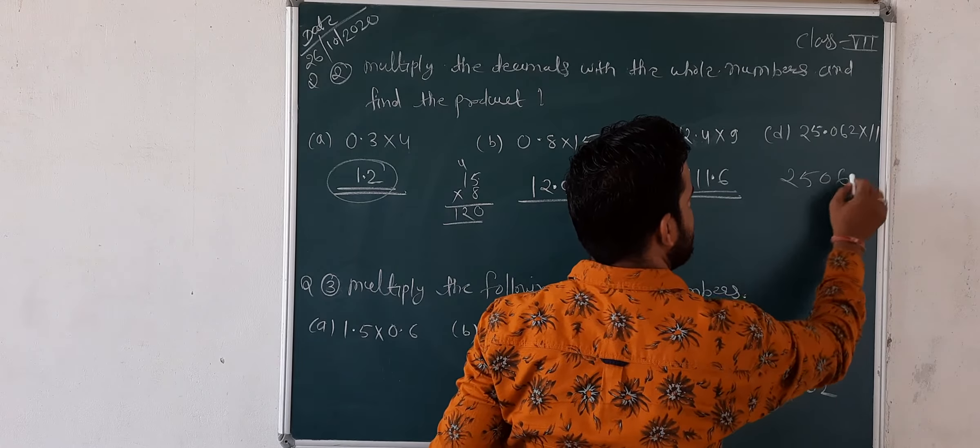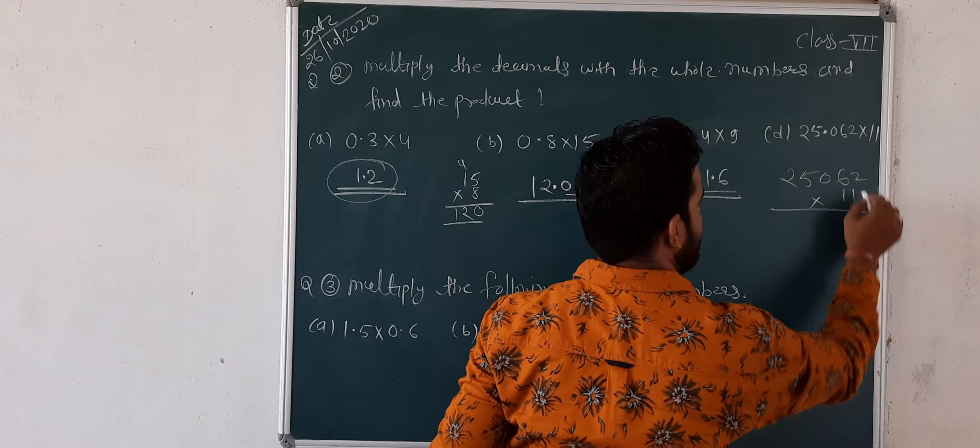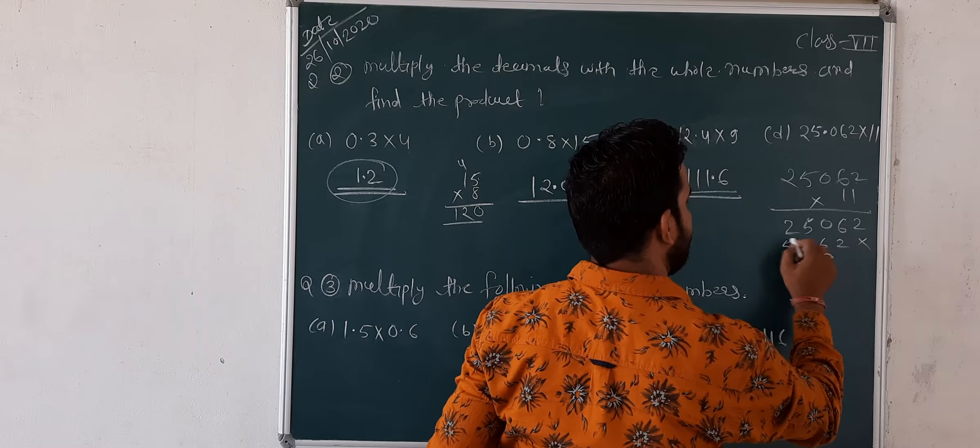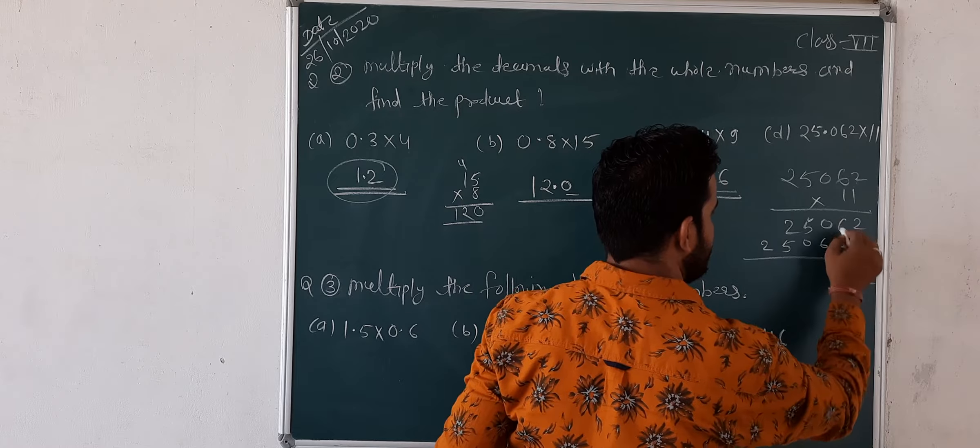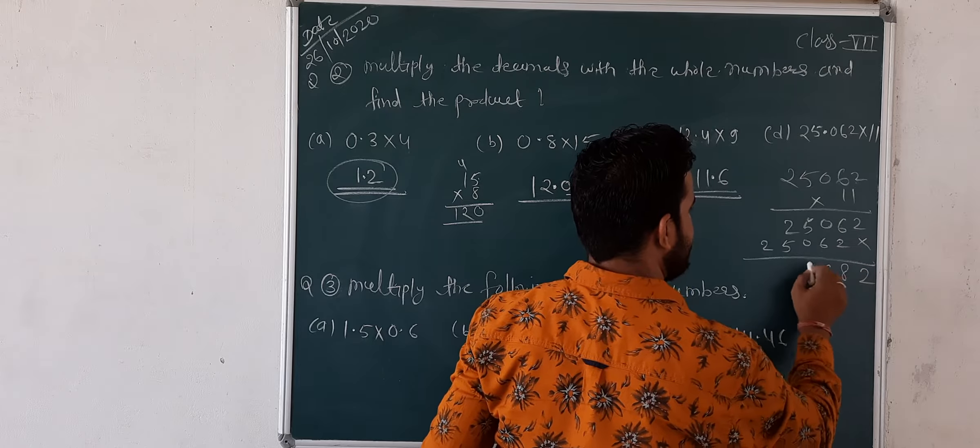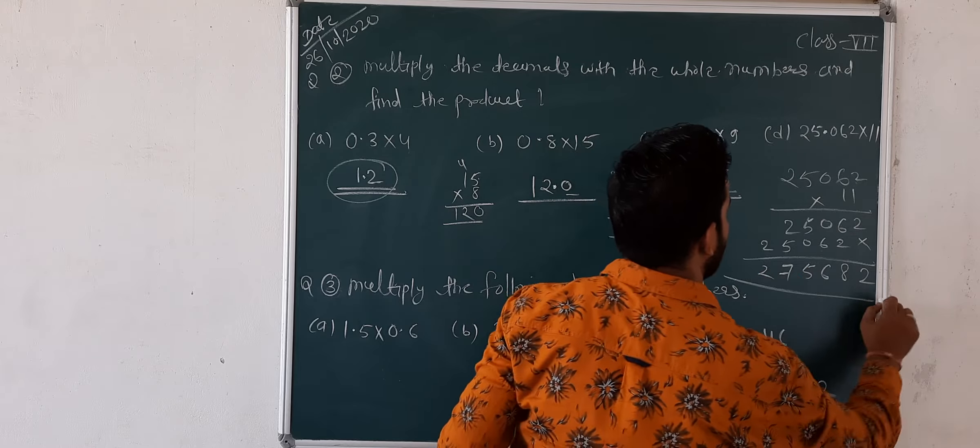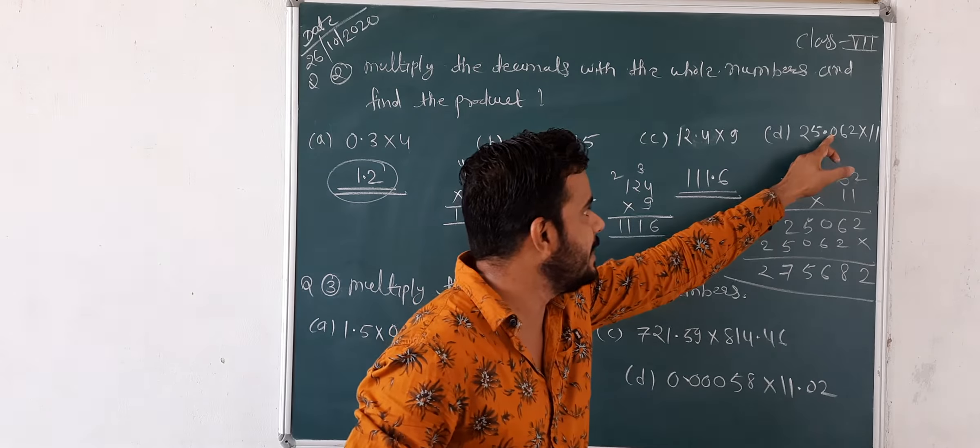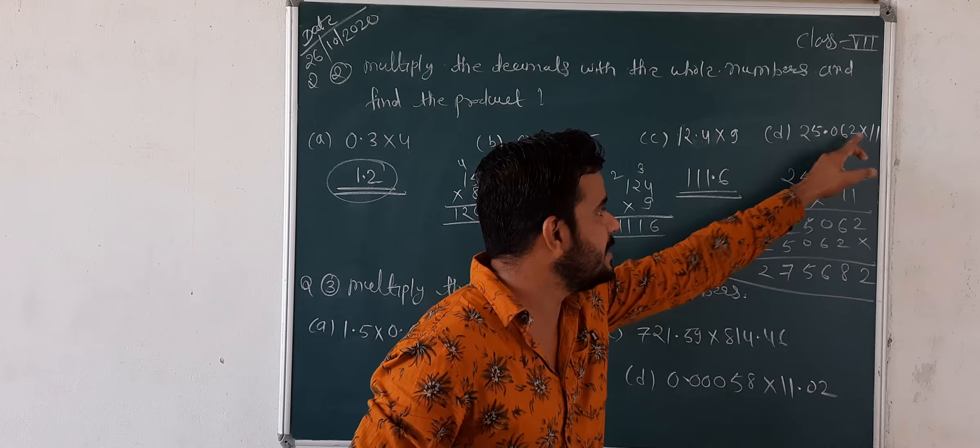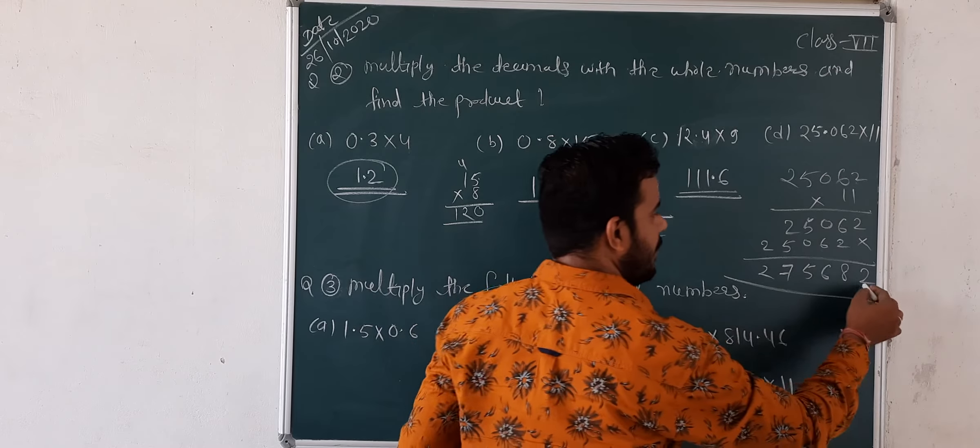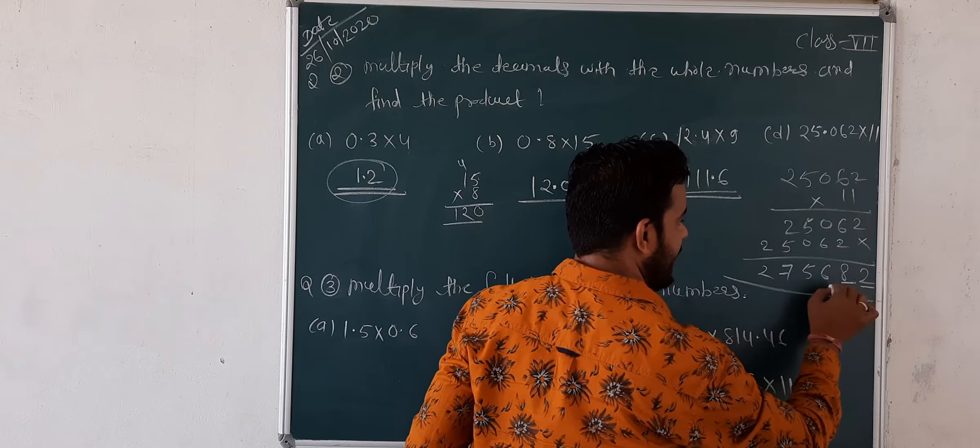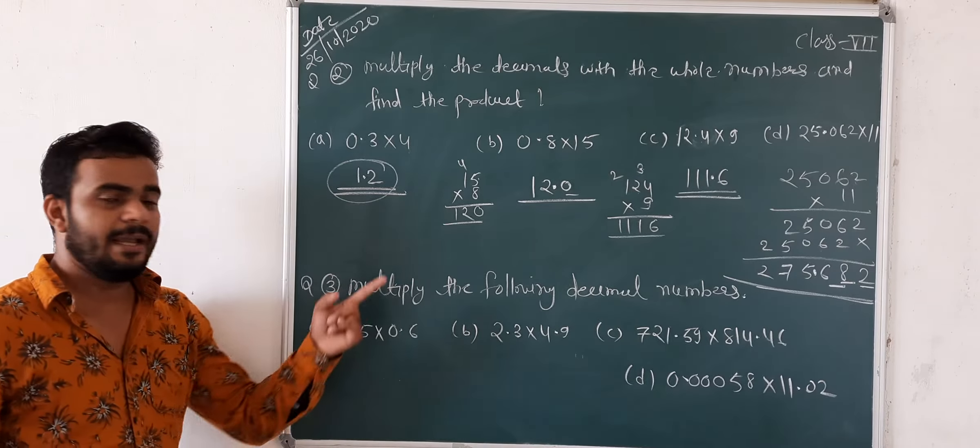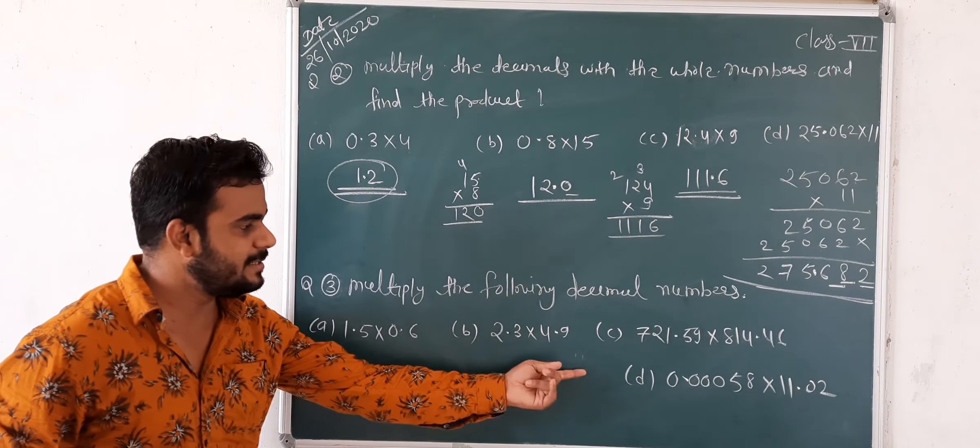Next, 12.4 x 9. 9 x 4 equals 36, carry 3. 9 x 2 equals 18, plus 3 equals 21, carry 2. 9 x 1 equals 9, plus 2 equals 11. Point ke baad me ek place hai. To again, ek place chhod ke point put kar do. Answer is 111.6.